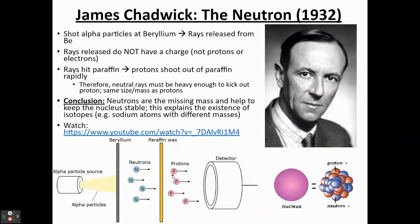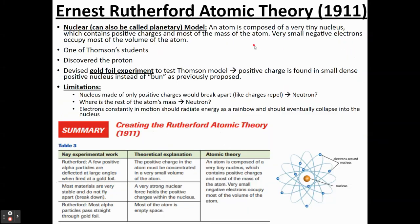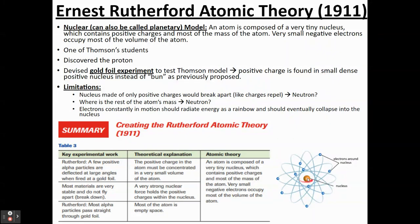The neutron helps to keep the nucleus stable, holding the positive charges together. It also helps to explain isotopes — why some atoms of the same element have different masses. They have the same number of protons, so what changes is the number of neutrons. This was essentially added to Rutherford's model: a dense nucleus with protons and neutrons, electrons orbiting around it, and the atom mostly empty space.